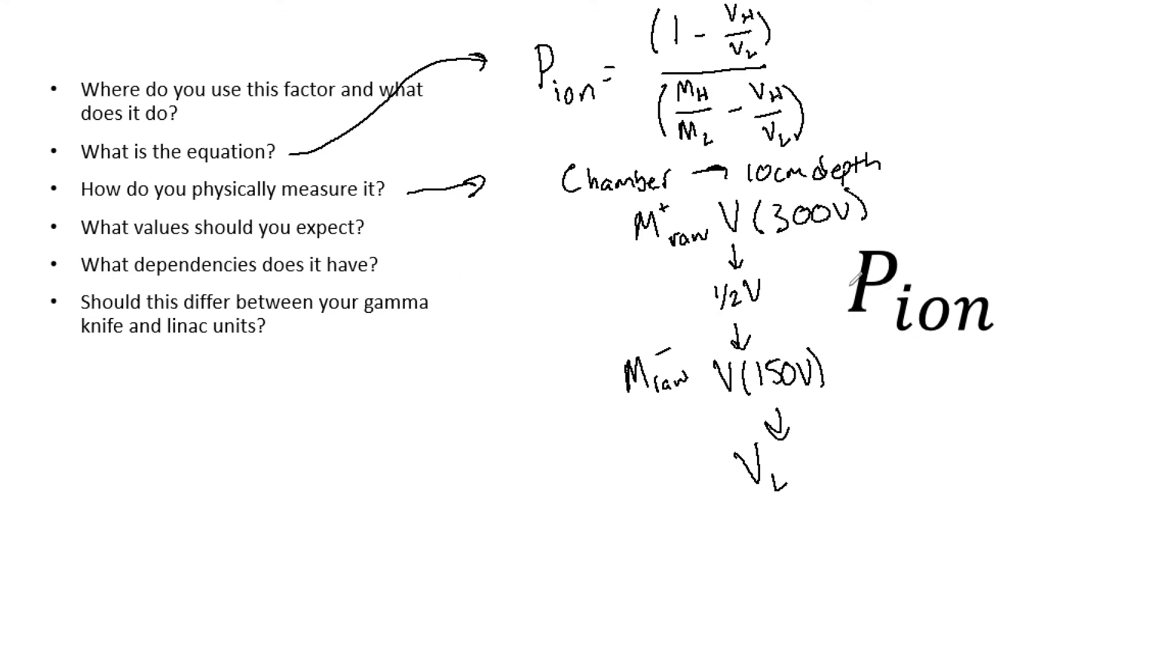So now what values should you expect? First of all, your P ion must be less than 1.05. Otherwise, you need to find a new chamber.